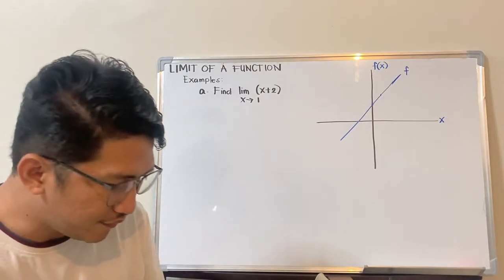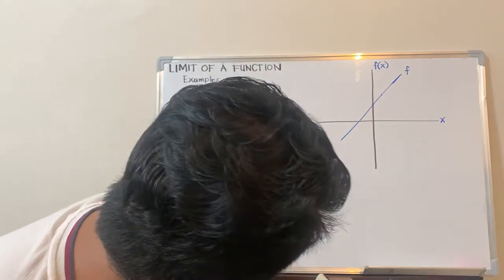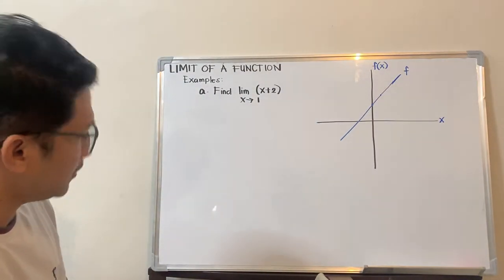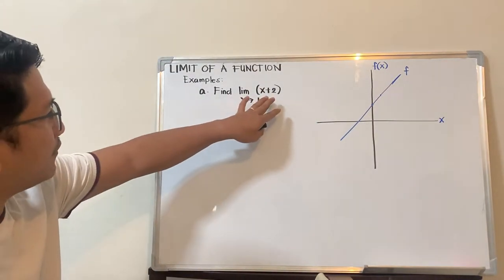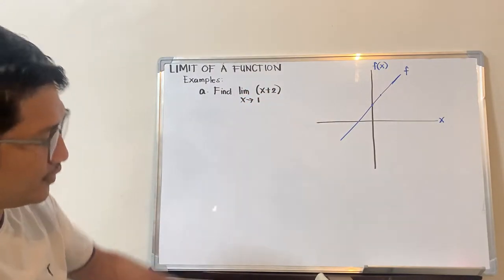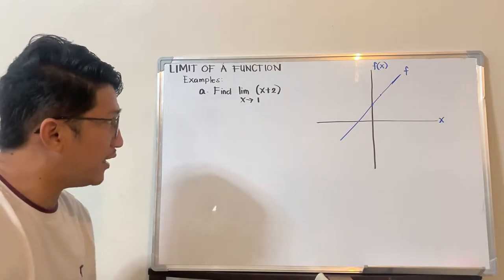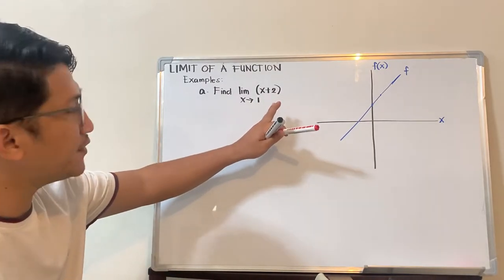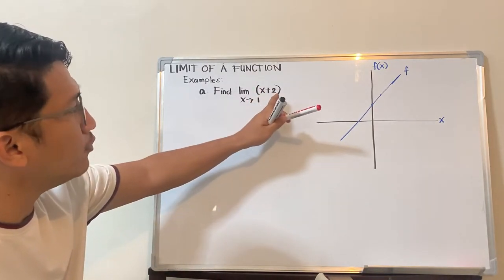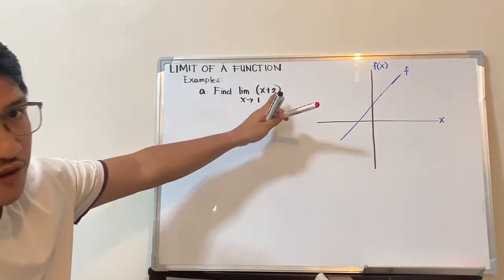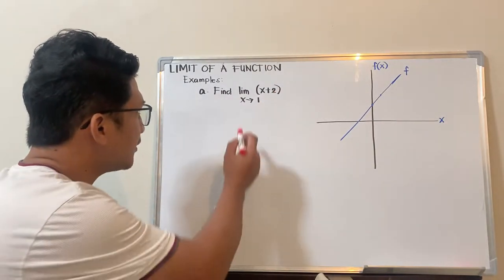So we have here the first example: find the limit of x plus 2. So we have the limit of x plus 2—x plus 2 is our function this time. If you recall from the previous video, we had the limit of f(x), but this time we have the limit of x plus 2, which is the definition of the function f(x), as x approaches 1.